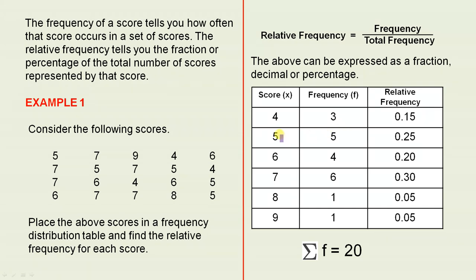For the score of 5, the frequency is 5, so the relative frequency is 0.25, which is 5 over 20. For the score of 6, the frequency is 4, so the relative frequency is 0.20, and so on.